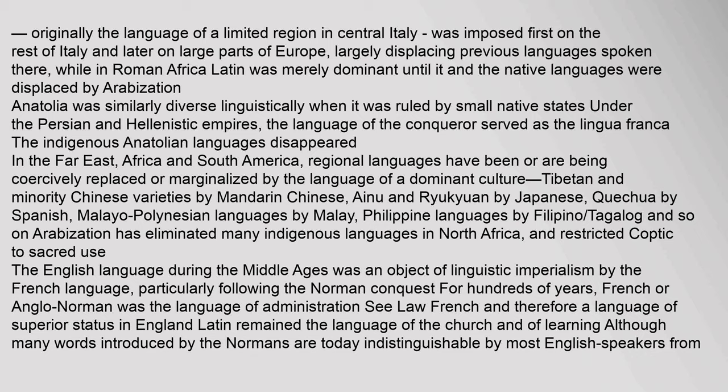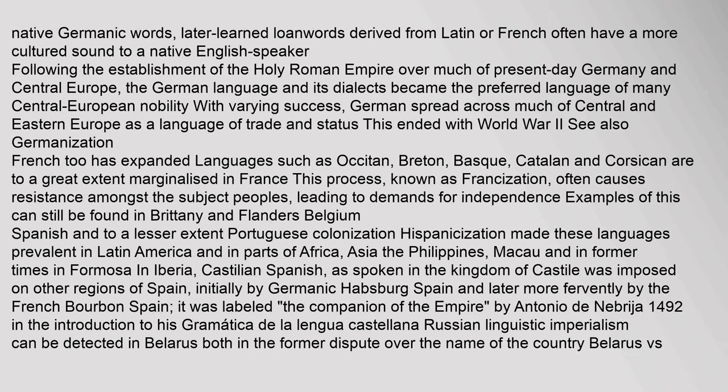The English language during the Middle Ages was itself an object of linguistic imperialism by the French language, particularly following the Norman conquest, for hundreds of years. French or Anglo-Norman was the language of administration and therefore a language of superior status in England. Latin remained the language of the church and of learning. Following the establishment of the Holy Roman Empire, the German language and its dialects became the preferred language of much of Central European nobility, spreading as a language of trade and status — this ended with World War II.